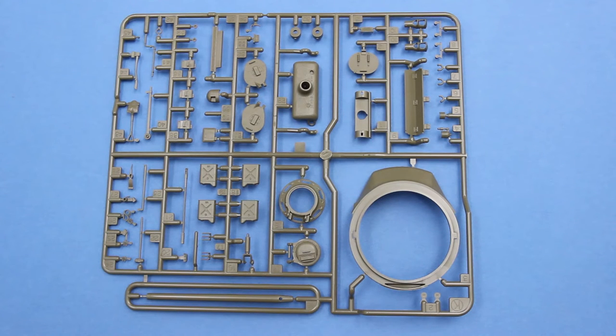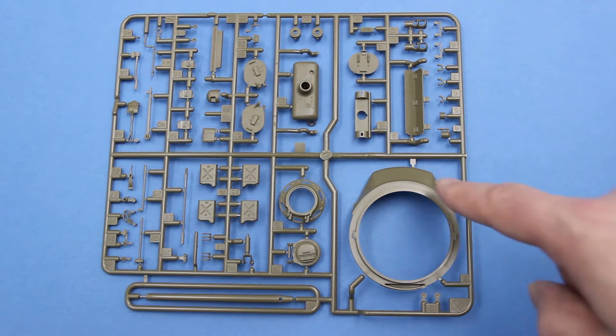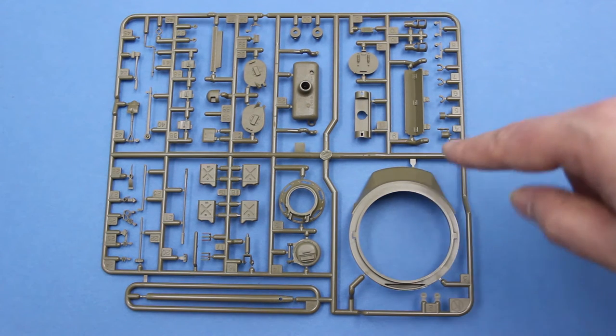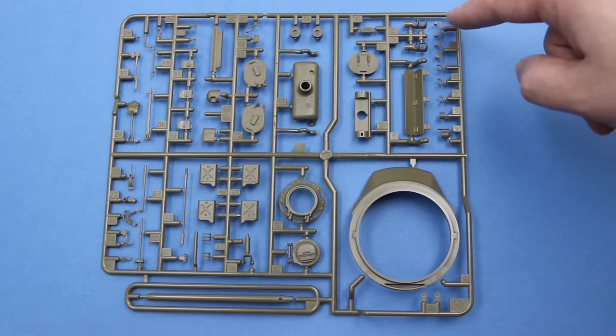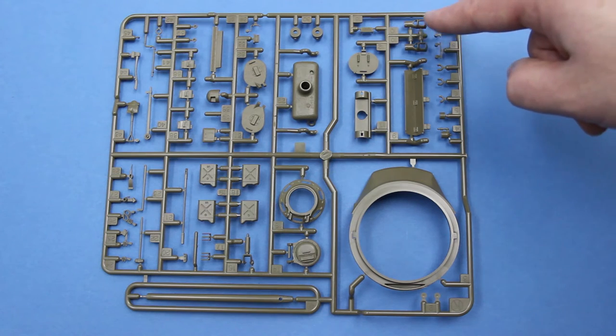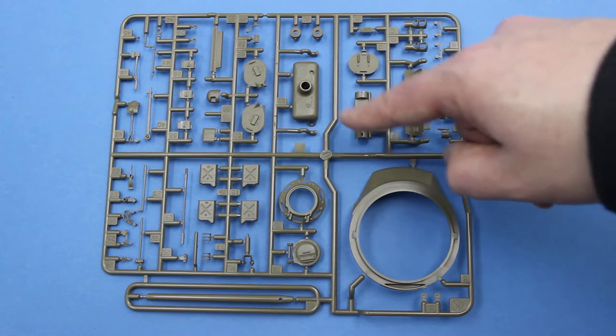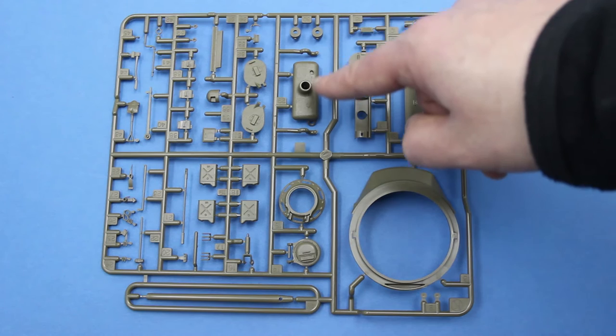The next sprue contains some parts for the turret and some hatches. You can see here the turret ring and lower part of the turret. The luggage rack. Searchlight and lifting hooks. The muzzle brake for the gun. Loader's hatch. And the gun mantlet.